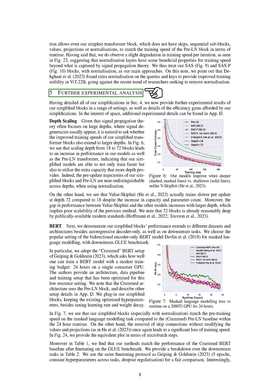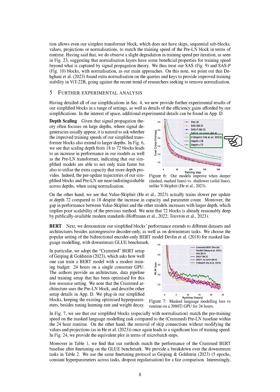In this section, we delve deeper into the experimental analysis of our simplified blocks. Let's start with depth scaling. Signal propagation theory often concentrates on large depths, where signal degeneracies typically occur. So, it's logical to question if our simplified transformer blocks can maintain their improved training speeds at larger depths. Our experiments show that when we increase the depth from 18 to 72 blocks, both our models and the pre-LN transformer perform better, suggesting that our simplified models can train faster and make better use of the additional capacity provided by more depth.